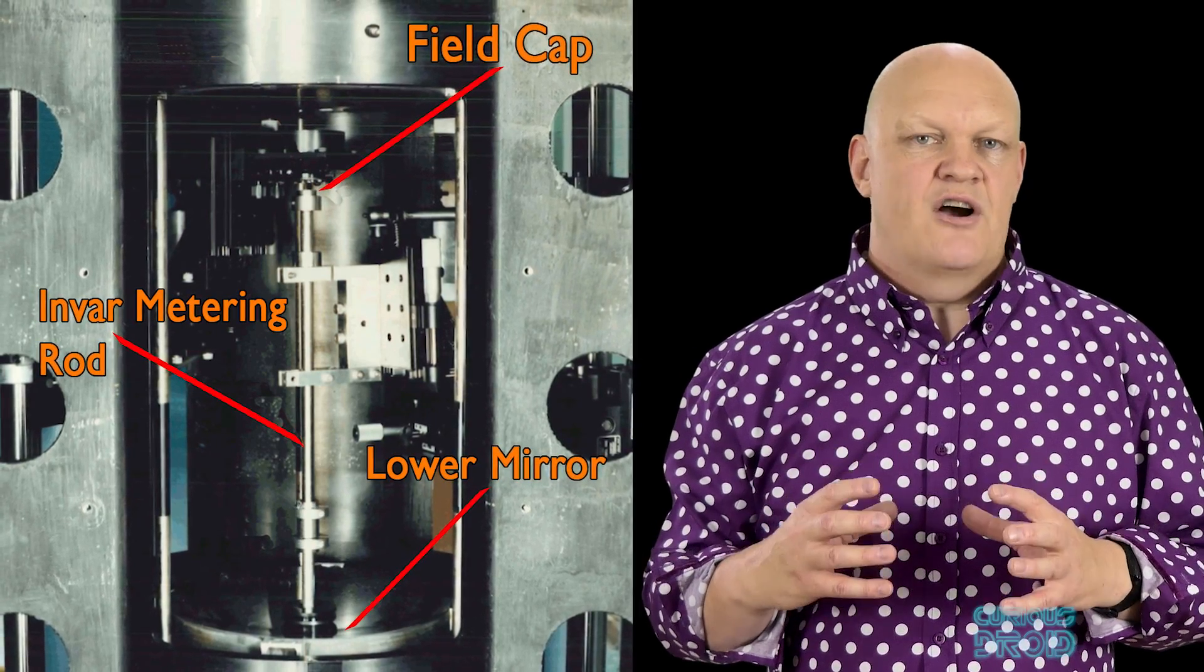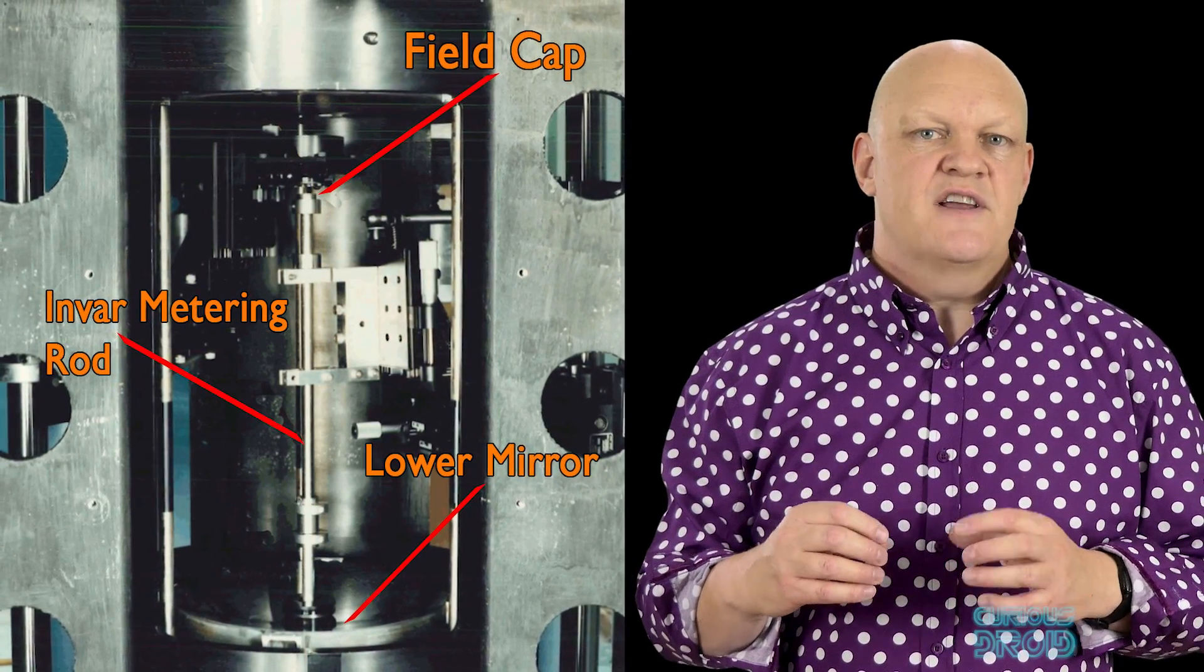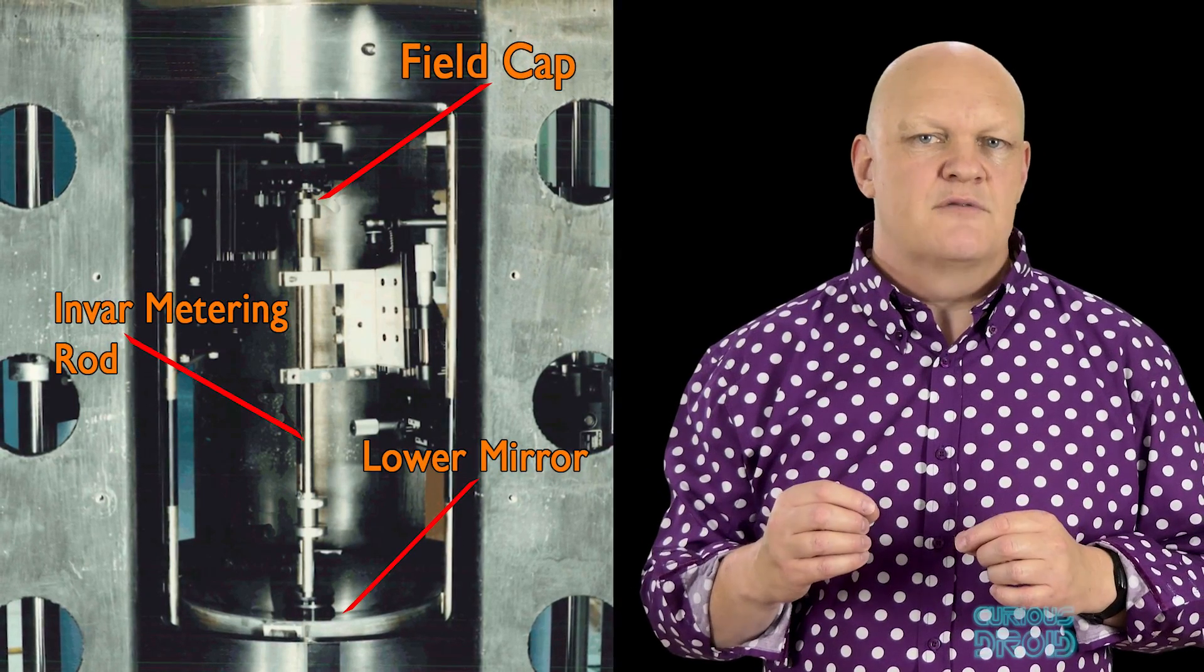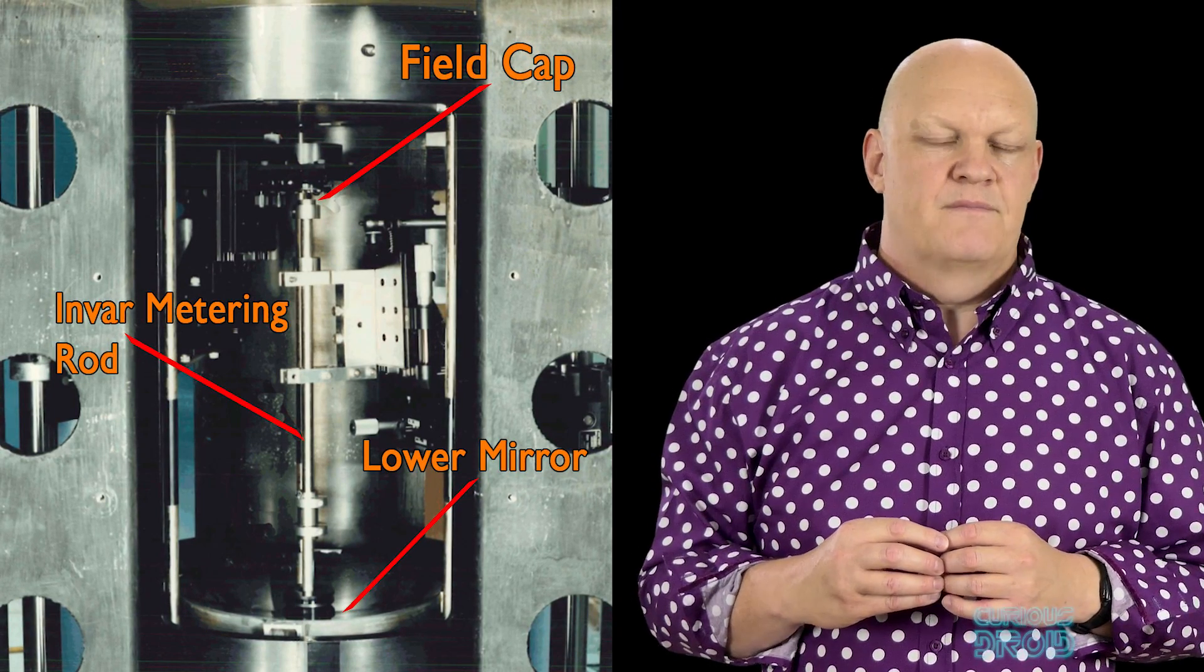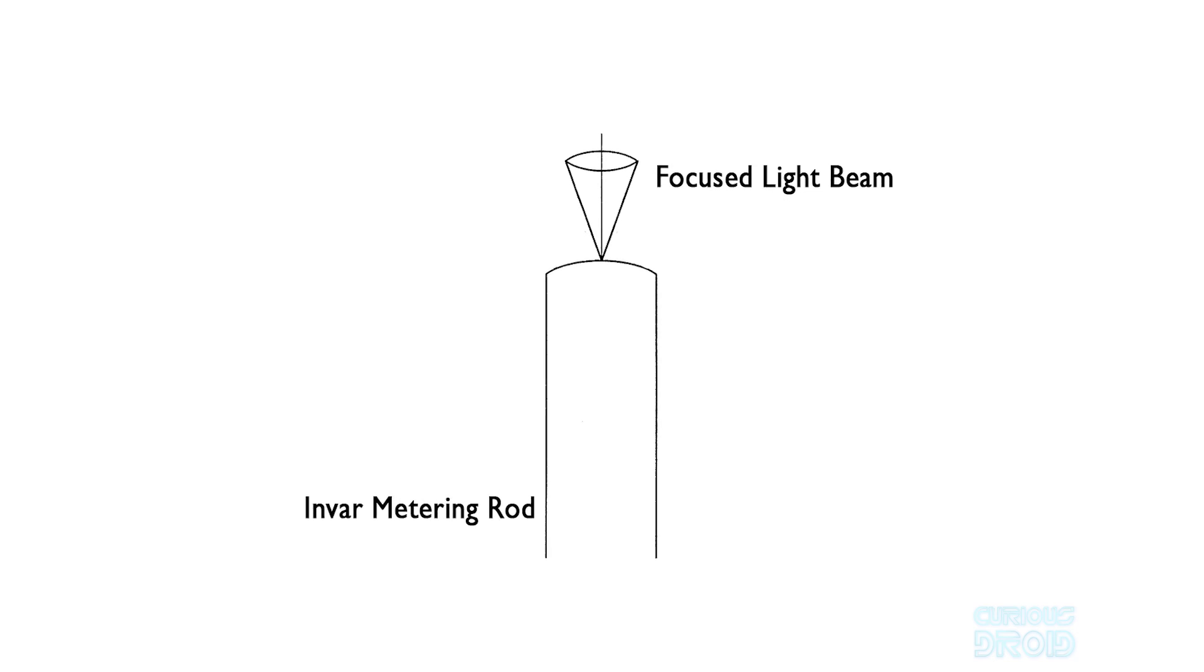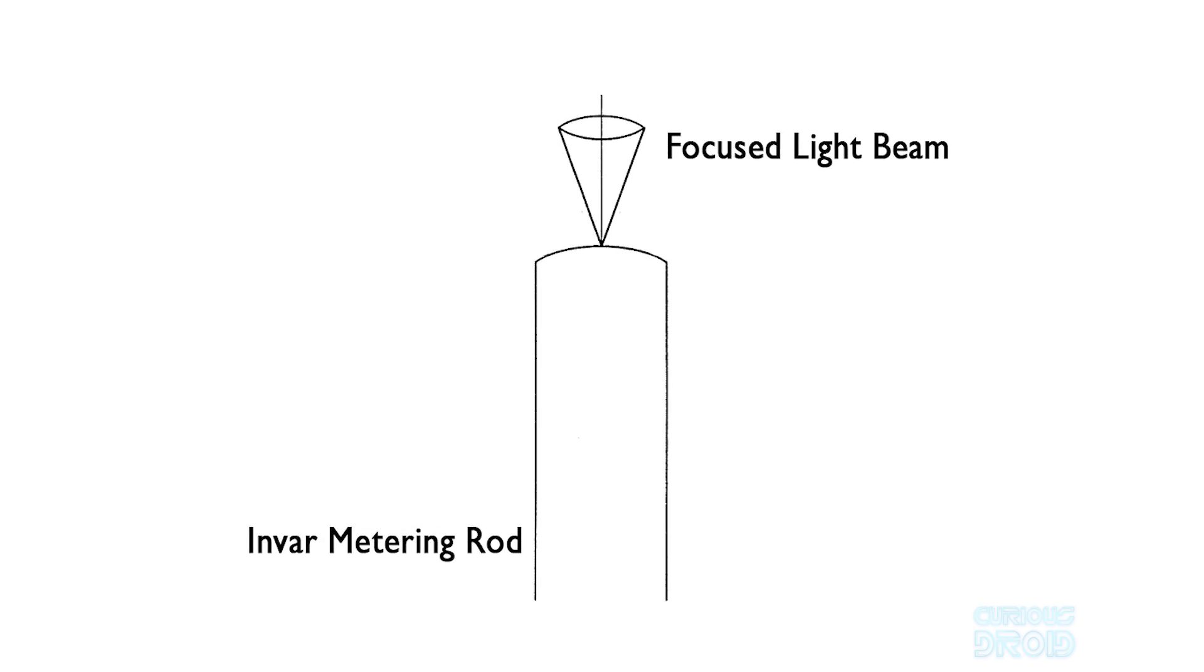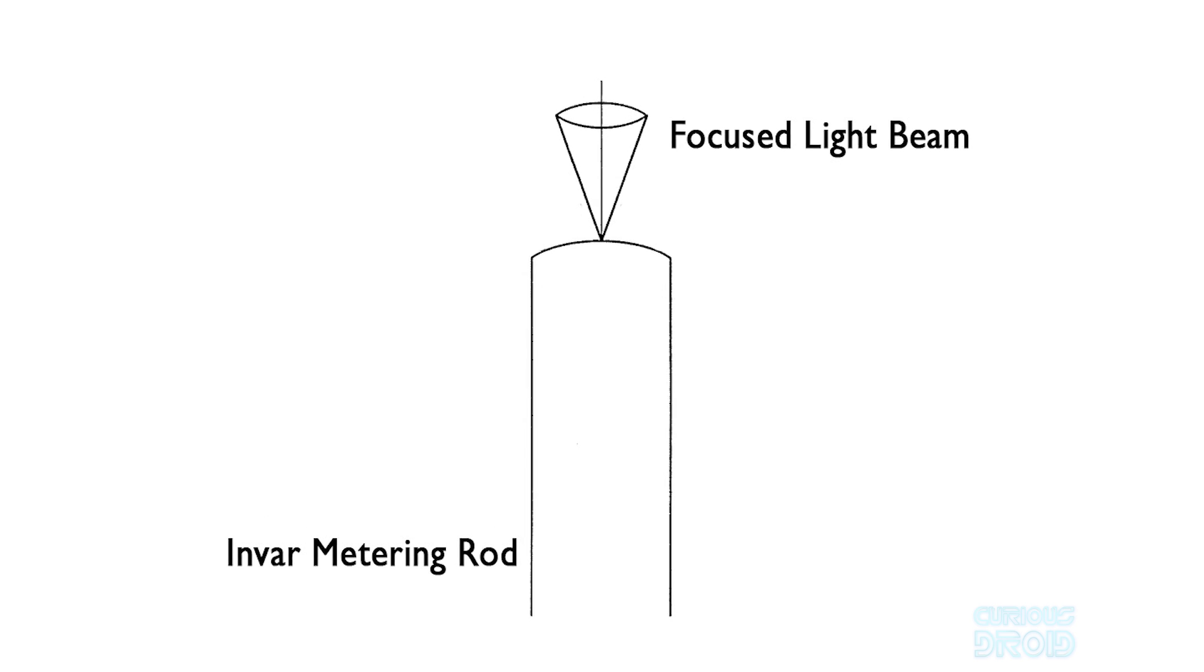As the technicians lowered the lens of the RNC into position, they noticed they couldn't get it all to fit together. The Invar rod stuck out by just over a millimeter. The ends of the Invar rod were rounded and polished because the positioning system used a light interferometer rather than a mechanical measurement.